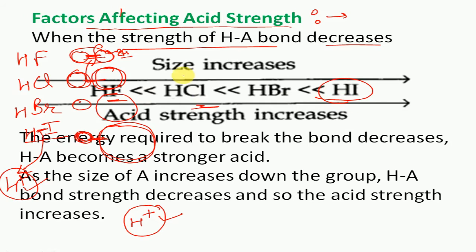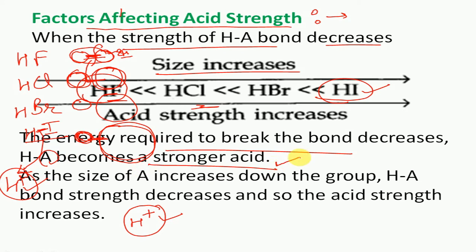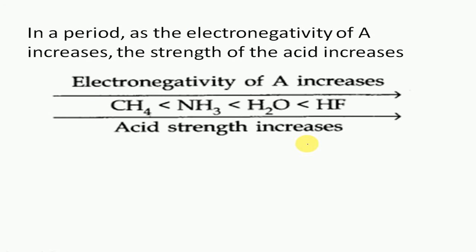In contrast, the H–I bond is very weak because effective overlapping is poor due to the large difference in size between H and I. The H–I bond is therefore easily broken, releasing H+ more easily. So HI is more acidic and HF is least acidic. As size increases from F to I, the bond energy decreases and HA becomes a stronger acid. Moving next, if we talk about the groups and periods of these elements...